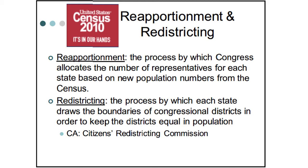At the end of the census, we count everybody up, determine where people have moved and where people have been born, and then we apportion the seats. We have 435 seats in the U.S. House of Representatives, and we divvy those up depending on how many people live in each state.